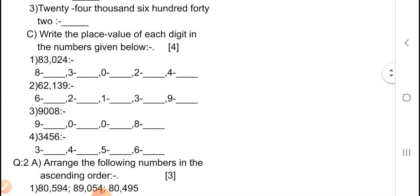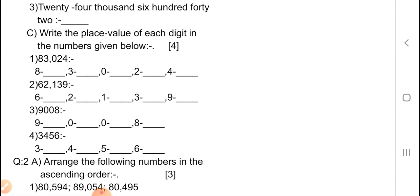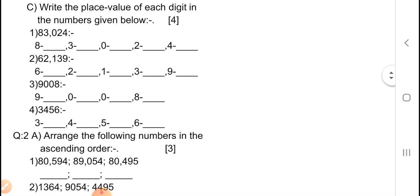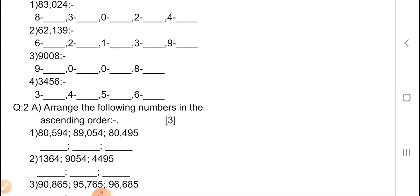Now C — write the place value of each digit in the numbers given below. Its marks is 4. Number 1: 83,024 — you have to write down the place value of 8, then 3, 0, 2, 4. Now second one is 62,139 — here also you have to write down the place value of 6, 2, 1, 3, 9.